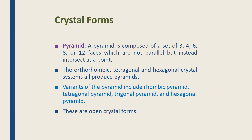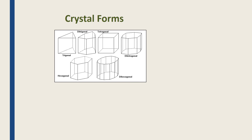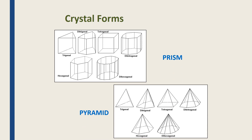The second form is the pyramid — be careful, this is not a bipyramid. A pyramid is composed of three, four, six, eight, or twelve faces that are not parallel but instead intersect at one point at the top. Orthorhombic, tetragonal, and hexagonal crystals have this form. In pyramids you can see trigonal, tetragonal, and hexagonal variants — they meet in one point but are open at the bottom, so it is still an open form.